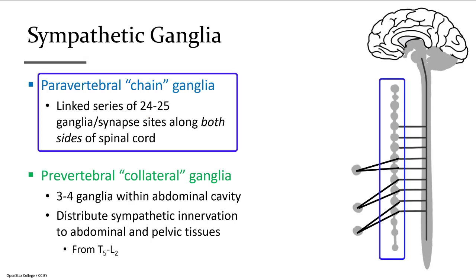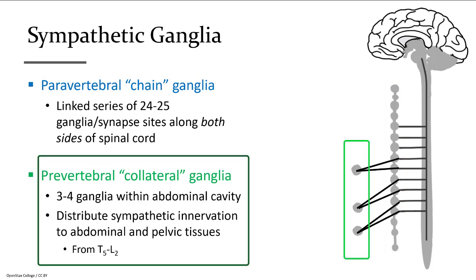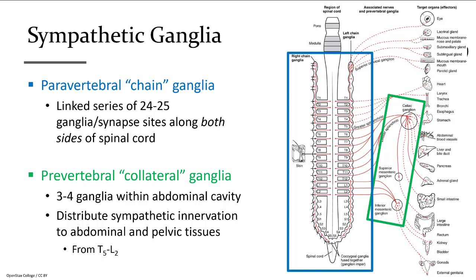The chain ganglia is known as paravertebral — there are two, one on either side, although only one is visible in this image. There is an additional cluster known as prevertebral or collateral ganglia that are farther out, specific to the abdominal pelvic region. We can see the paravertebral chain ganglia in blue on either side of the spinal cord, and in green the prevertebral or collateral ganglia, which directs impulses throughout the abdominal pelvic region — including the stomach, abdominal blood vessels, liver, pancreas, adrenal gland, intestines, kidney, bladder, and gonads.